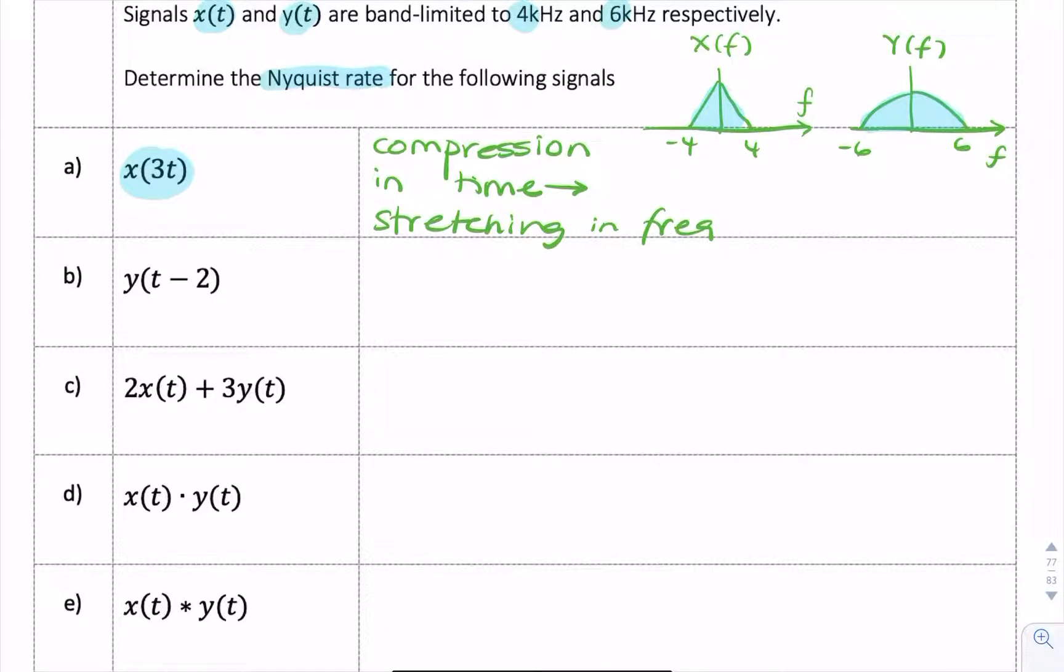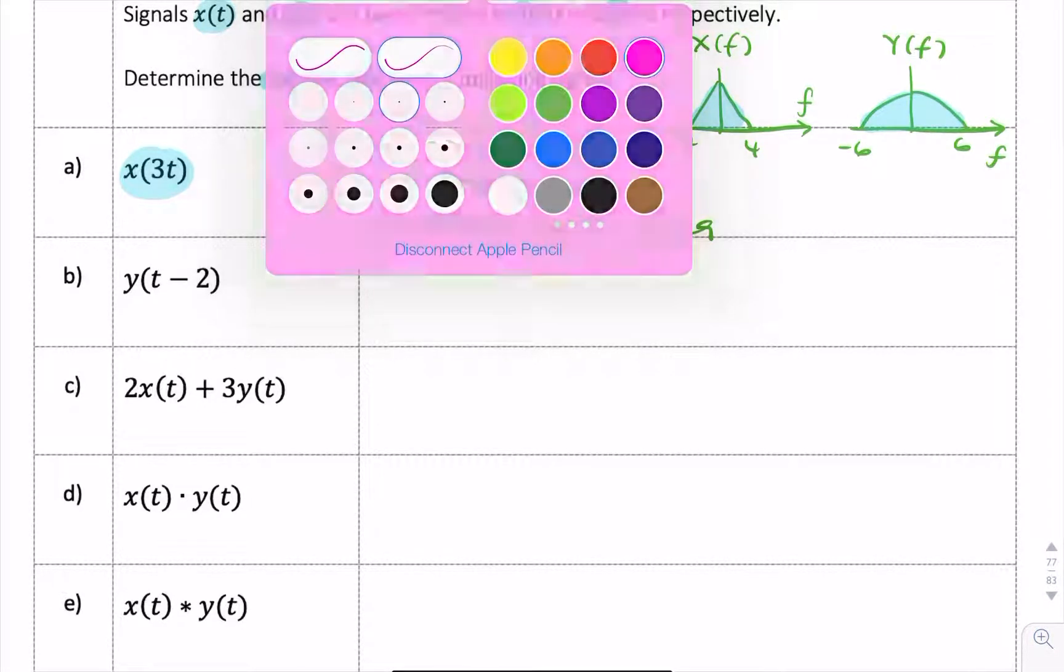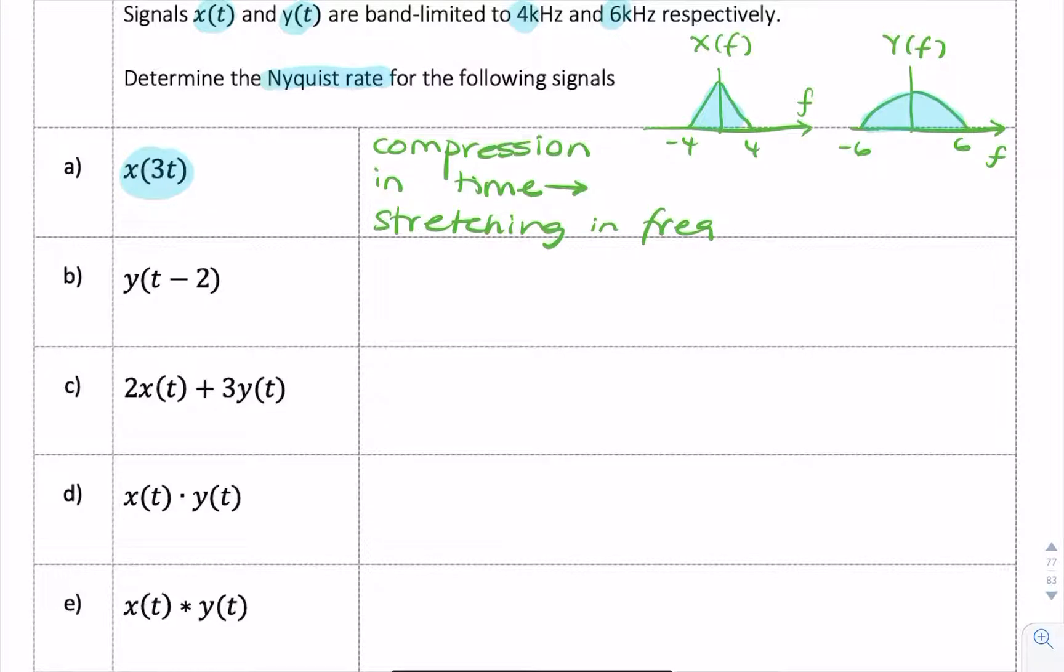So you can imagine that the spectrum of that, if we were to write the Fourier transform, it would look something like this: X of 3t would correspond to 1 over 3 X of omega over 3. So the omega over 3, that's the stretching that stretches the spectrum out so that we have a spectrum which is 3 times as wide.